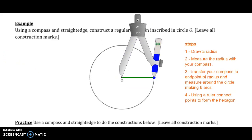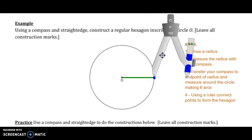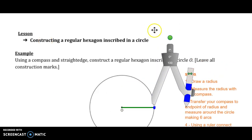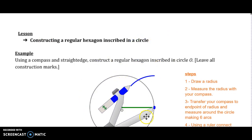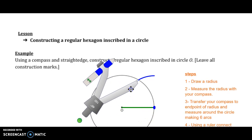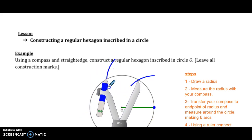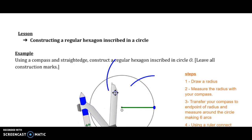What you're now going to do is transfer your compass, leaving that compass distance the same to the end point of your radius. And what we're going to do is go around the circle. I'm going to take my compass, still not changing the opening.